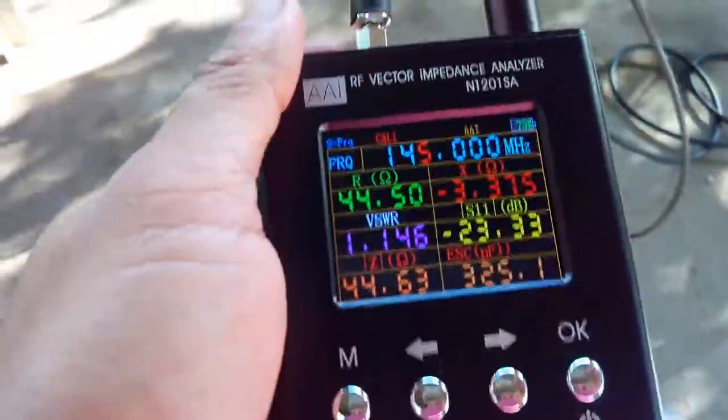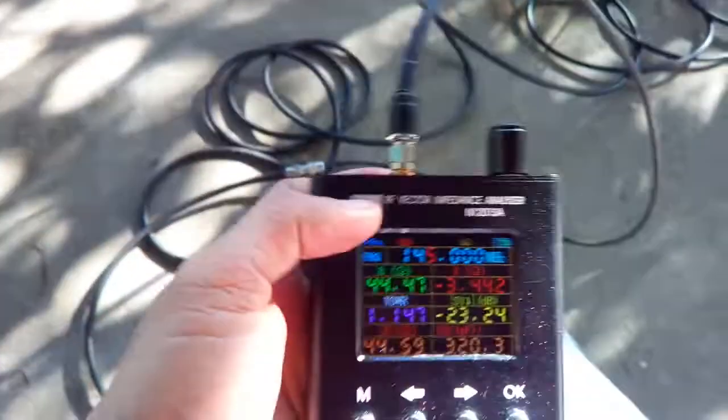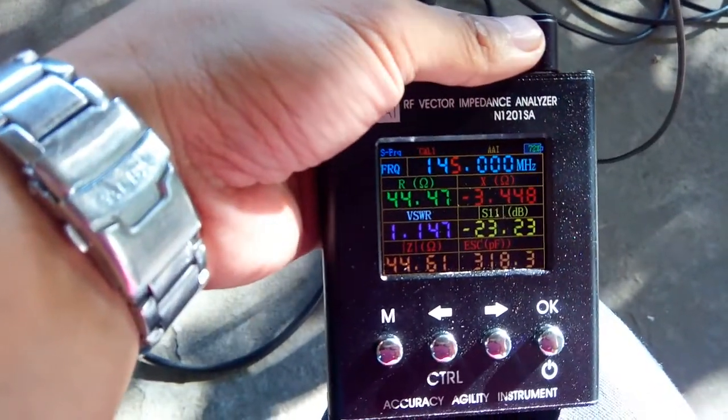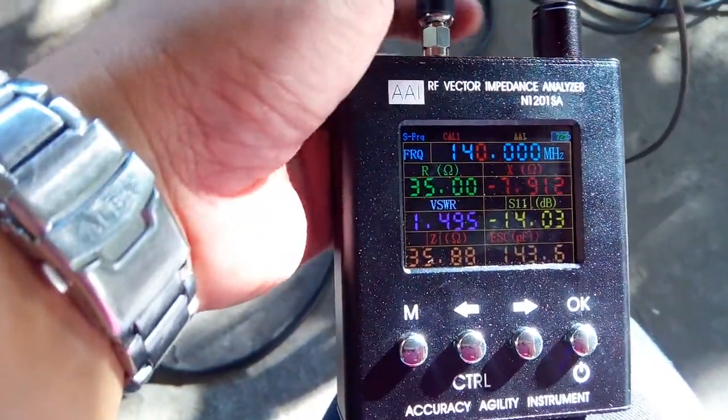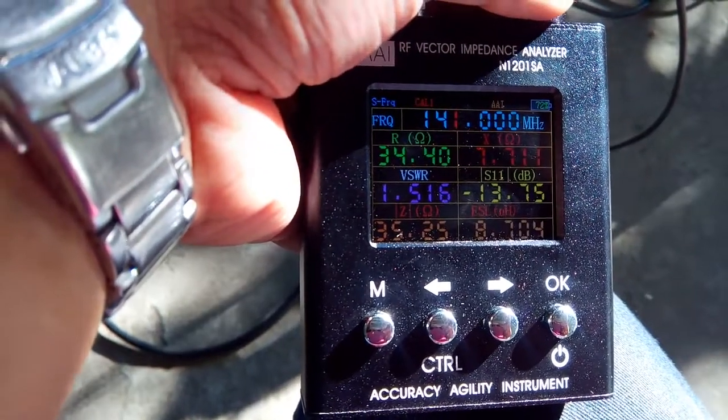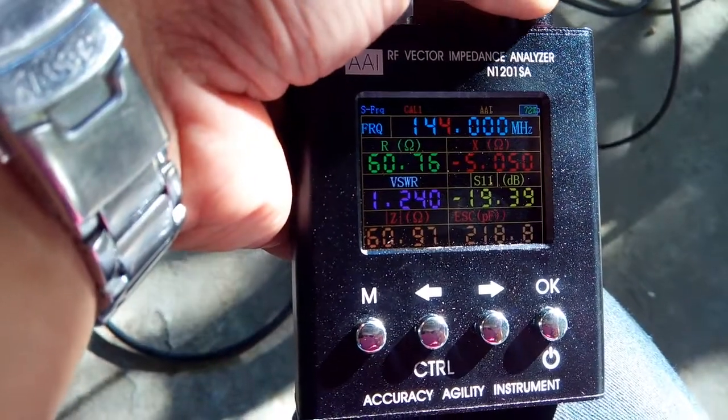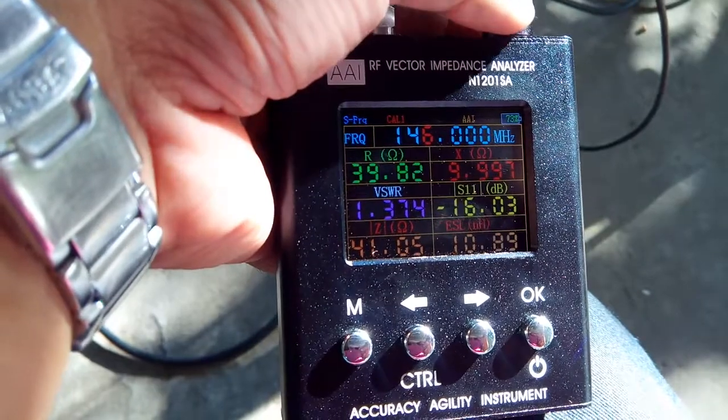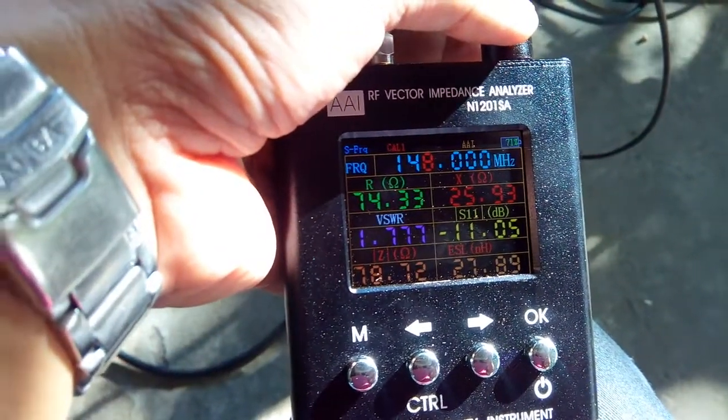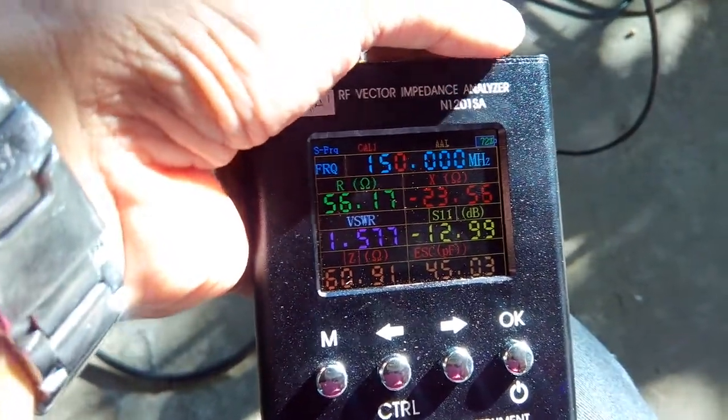So at 145 megahertz the VSWR response is 1.1 SWR. Let's check the other frequencies on the amateur band, or let's say 140 to 150 megahertz. At 140 is 1.4 or 1.5. 141 is 1.5, 142 is 1.5, 143 is 1.43, 144 is 1.2, 145 is 1.1, 146 is 1.3, 147 is 1.6, 148 is 1.7, 149 is 1.7, and 150 is 1.5.